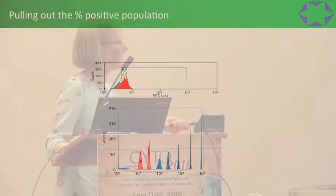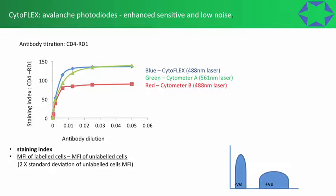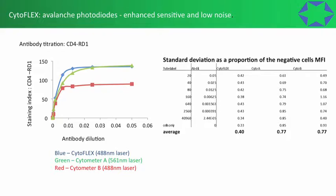Moving on to some more samples: this is an antibody titration with CD4 RD1, a PE-type antibody. We can see the staining index on the y-axis and antibody dilution on the x-axis across three different cytometers. The CytoFLEX shown in blue has a very good staining index comparable to cytometer A, which actually had a 561 laser. This surprised me because the CytoFLEX I was using had a 488 laser, so I wanted to look in more detail at how it managed to be so good.